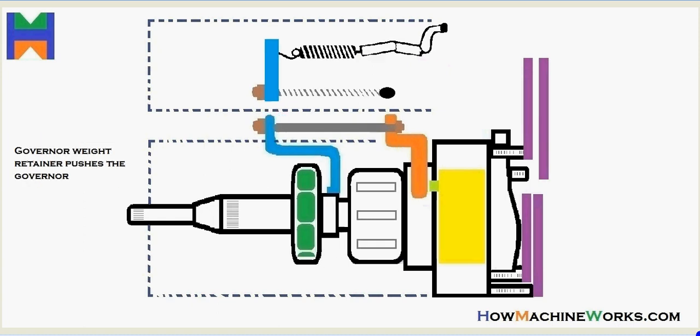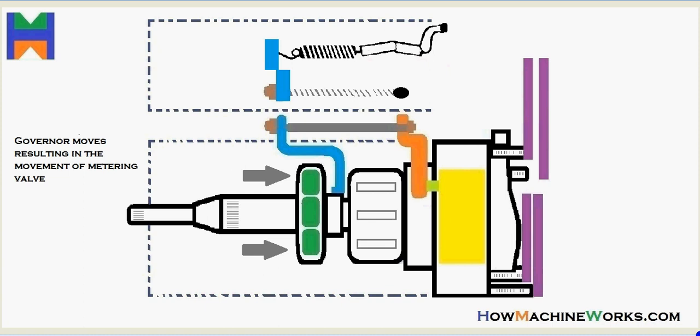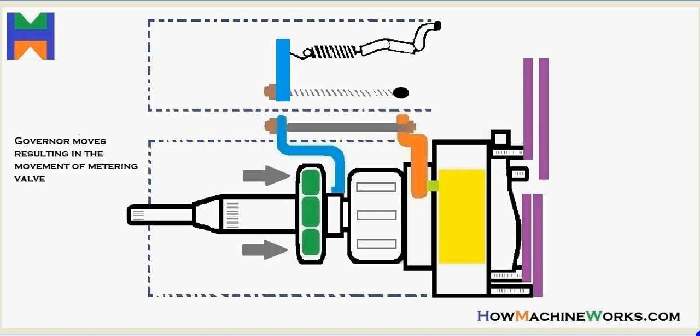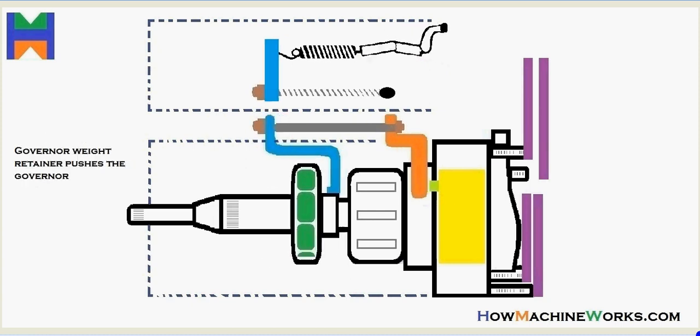And the governor weight retainers rotate, and due to the centrifugal force of its weight, it moves towards the front and pushes the governor in blue. You can see the governor is moving towards the front. And the metering valve is also moving because they are linked to each other with a spring.